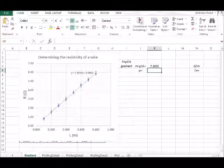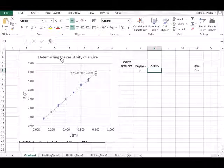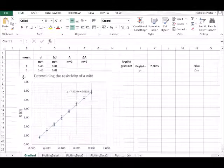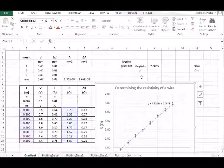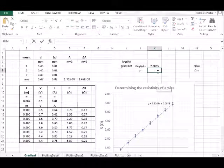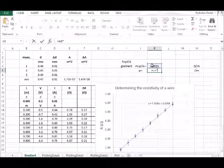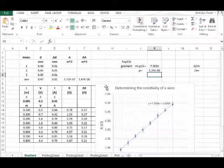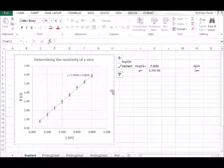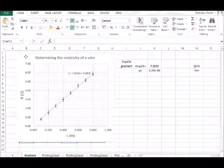Resistivity itself is measured in ohm metres, and to determine that value all we have to do is find our area from the previous video. We take our value of the gradient, multiply it by the area, and we end up with our resistivity. It's 1.25 times 10 to the minus 6 ohm metres.